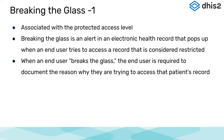Before we get into that, let's touch on something more concrete — why do we have these program access levels? In healthcare and digital health records, we have a concept called 'breaking the glass.' In DHIS2, this concept is associated with the protected access level. As a general concept, this applies not just to DHIS2 — it's a universal electronic health record concept. Breaking the glass is an alert that occurs when an end user accesses a record that is considered restricted. When this happens, they're required to document the reason why they are trying to access that restricted record.